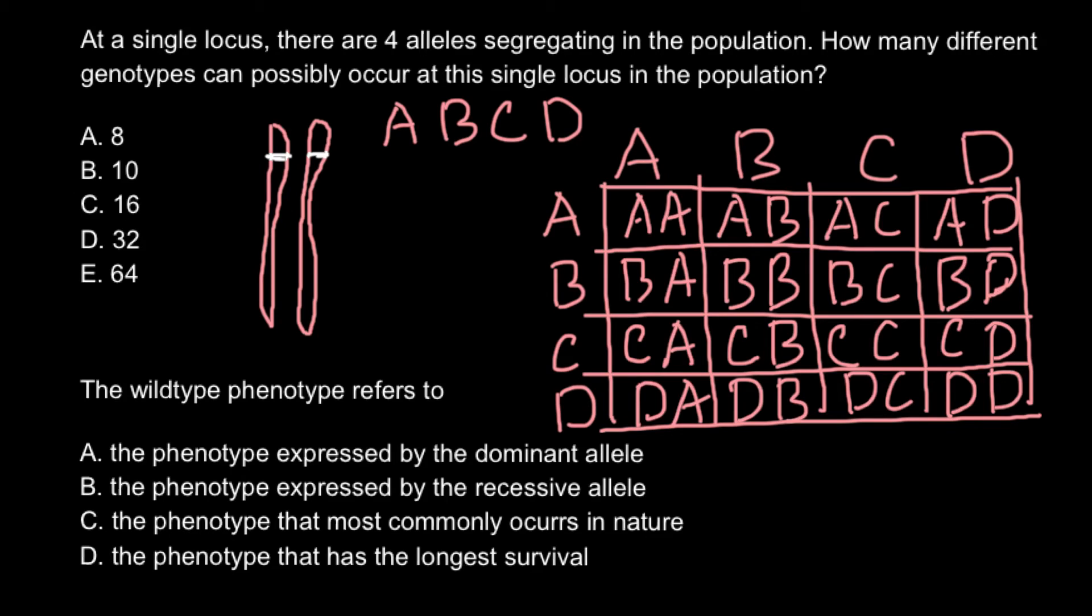But if you think that there are 16 different combinations, this is not so. Because, as you see, some of the combinations are repeated. For example, this combination B, A and A, B is the same combination. So A, B equals B, A. This is the same combination.